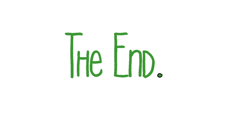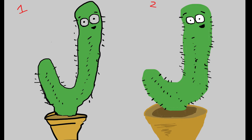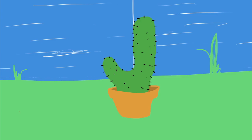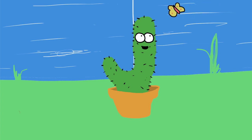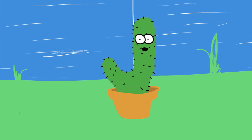I wanted to do something big — a three-minute animation. I got to work on an idea about a cactus who really wanted friends, but no one liked him because he was a bit of a prick. Here's a little short bit of him coming to life, with a little butterfly going past. I wanted to create a three-minute animation for the degree show.